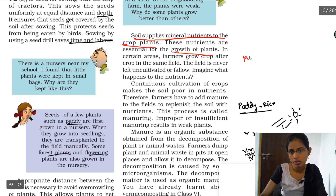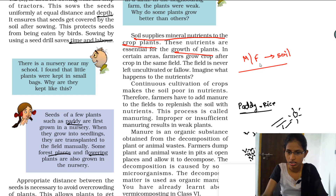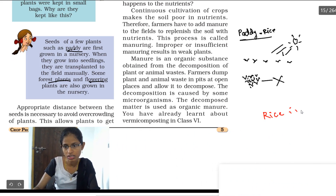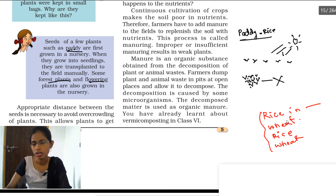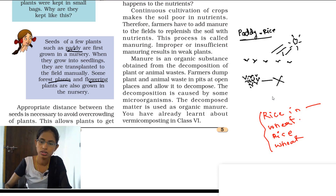Crops grown in the soil should be seasonal — in one season grow one crop, and in another season grow a different crop. If crops are grown continuously without changing, the soil will definitely lose its nutrients. For example, if a farmer grows rice in one season, in the next season he should grow wheat, then alternate again. This method is called the alternate method and helps replenish soil nutrients.